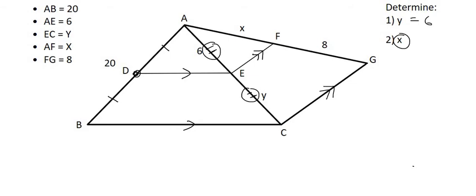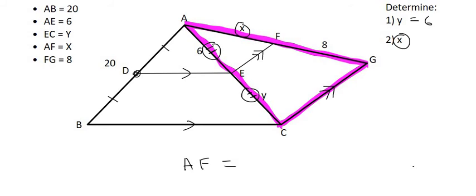So the next one is to work out the value of X, which is over here. If we zone into this triangle, we can then say that AF is equal to 8. Because why do we say that? Well, in that triangle, we've got a midpoint over there, because we discovered that in the previous question.